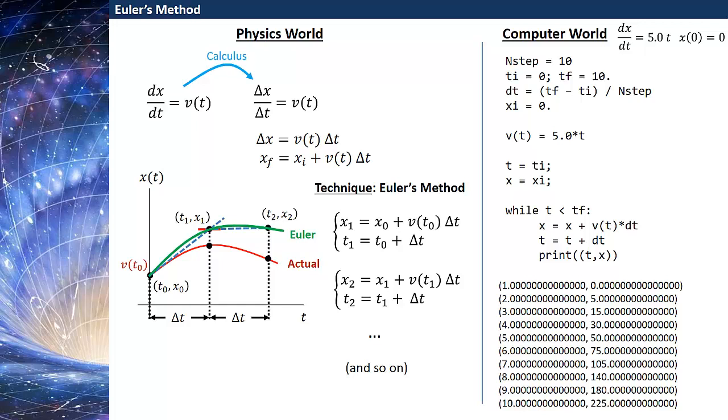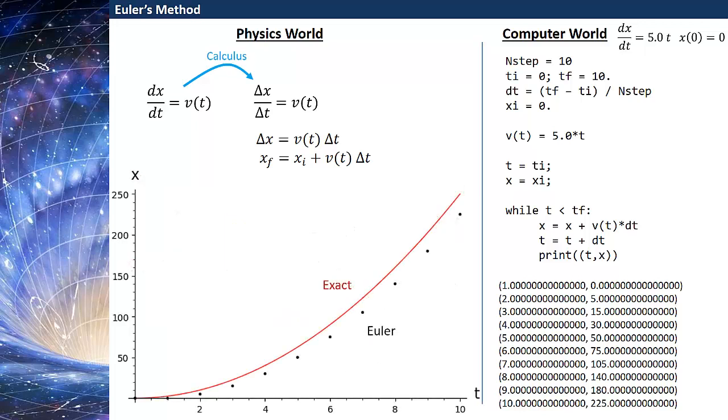Maybe it helps if we see what this looks like graphically. So if I plot this graphically I have my Euler solution to this differential equation, the numerical solution, and I've also plotted the exact solution to this differential equation because of course we can exactly solve this differential equation.